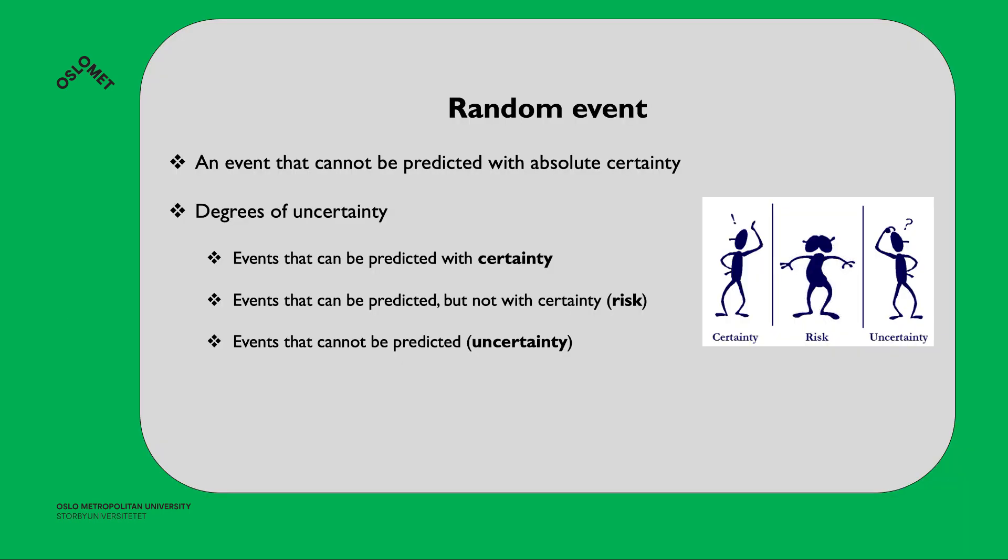Random events are events that cannot be predicted with absolute certainty. We can talk about the degree of uncertainty. Events that can be predicted with certainty, events that can be predicted but not with certainty - then we talk about risk - and events that cannot be predicted, that's called uncertainty.